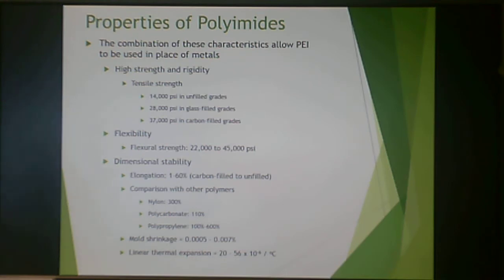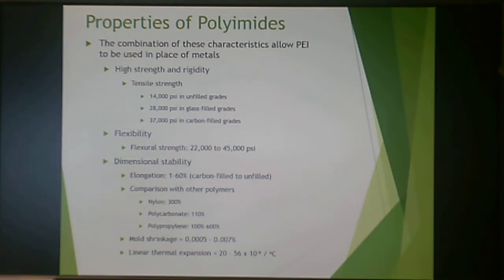When it comes to the properties of polyimides, they allow a polymer to be used in place of metal. Very high strength and rigidity — up to 37,000 psi if you're using a carbon-filled grade. Flexural properties up to 45,000 psi. Good dimensional stability. Not a lot of ductility, so not a lot of elongation, but very minimal mold shrinkage and very low linear thermal expansion.